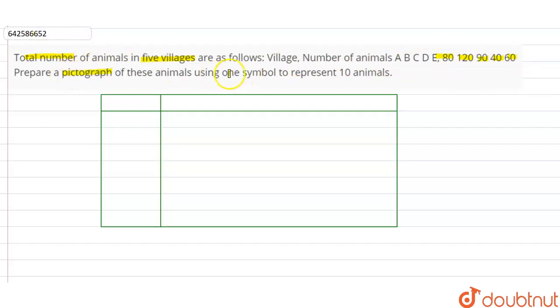Prepare a pictograph of these animals using one symbol to represent 10 animals. So this one symbol represents 10 animals in a village. Here we'll write the village name and here we'll write the number of animals.